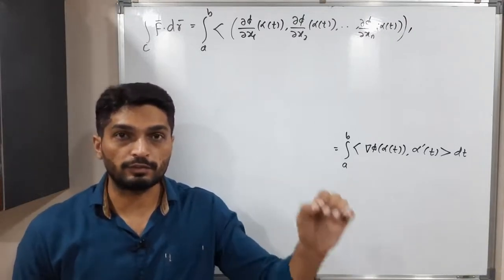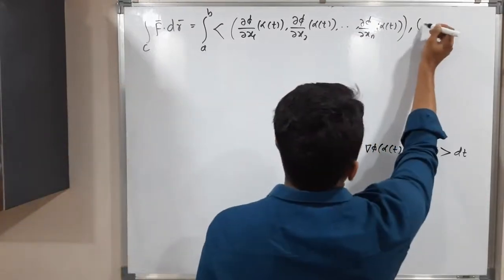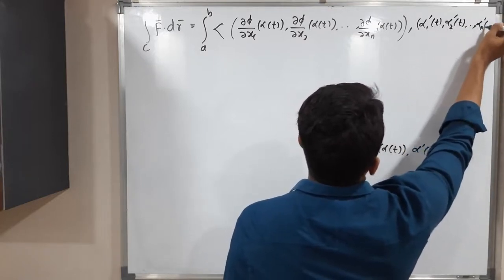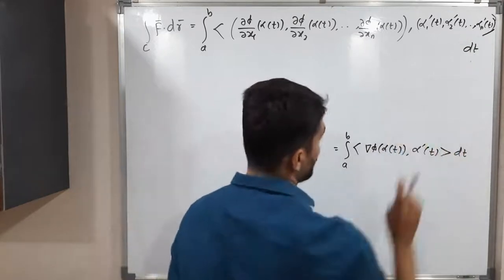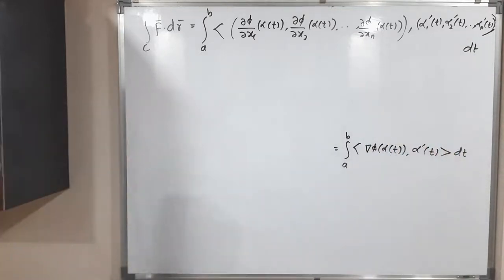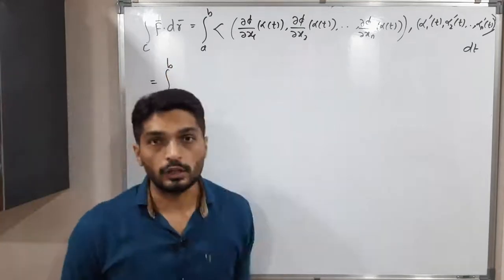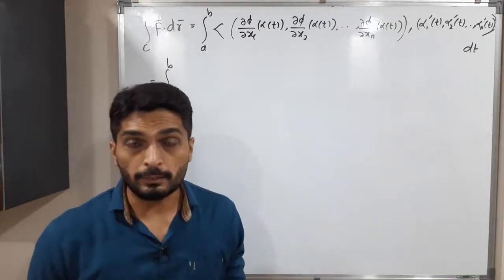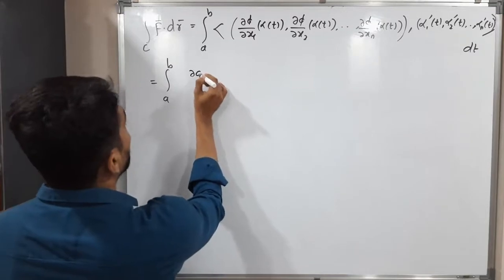The second argument alpha'(t) has components alpha₁'(t), alpha₂'(t), and so on up to alphaₙ'(t). Taking the inner product means multiplying the first components together plus the second components together, and so on. So we get the integral from a to b of: ∂phi/∂x₁(alpha(t))·alpha₁'(t) plus ∂phi/∂x₂(alpha(t))·alpha₂'(t), and so on.